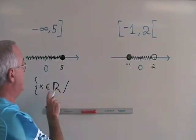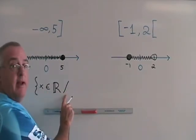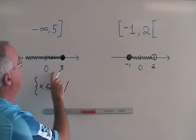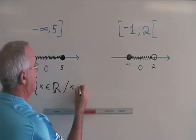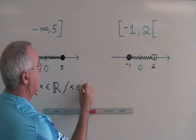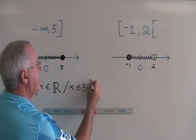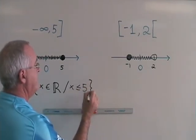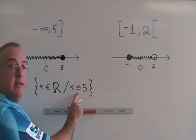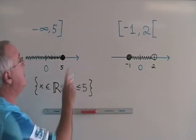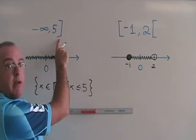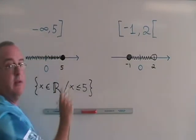This means x is an element of real numbers such that, and now I need the equation. The equation is going to be x less than or equal to 5. And I have to remember to close my braces. It has to be less than or equal to because the 5 is included, both with the square bracket pointing towards the 5 and the solid circle on the graph.